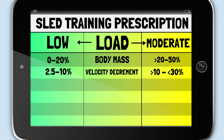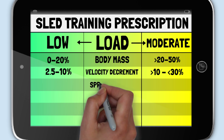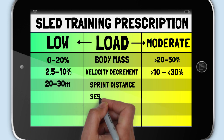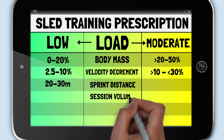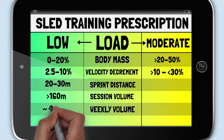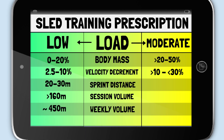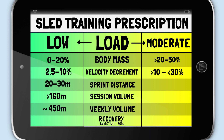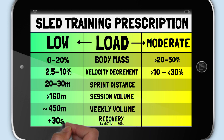Regarding low load sled prescription, a sprint distance between 20–30 metres and a session volume of around 160 metres or more, with a weekly volume of around 450 metres, is recommended. For recovery, this should be 1 minute for every 10 metres of unresisted sprinting, with an additional 30 seconds for low sled loads.